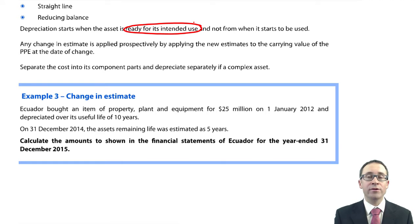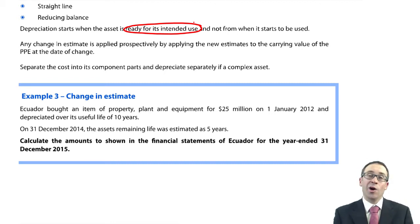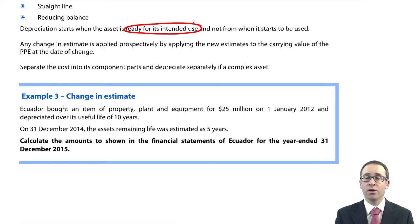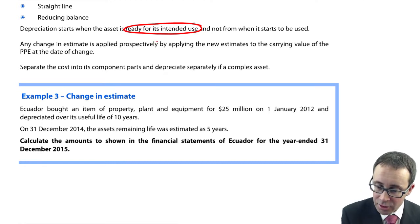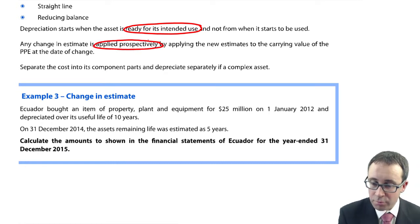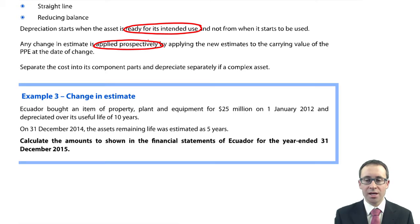If you change the estimate — whether that's a change to the method, i.e. straight line to reducing balance or reducing balance to straight line, or whether you change any other of the estimates such as the residual value, the percentage on the reducing balance, or the number of years over which you are depreciating the asset — then that is an adjustment that is applied prospectively. On the IAS, you apply it in the year of change and then keep that into future years.